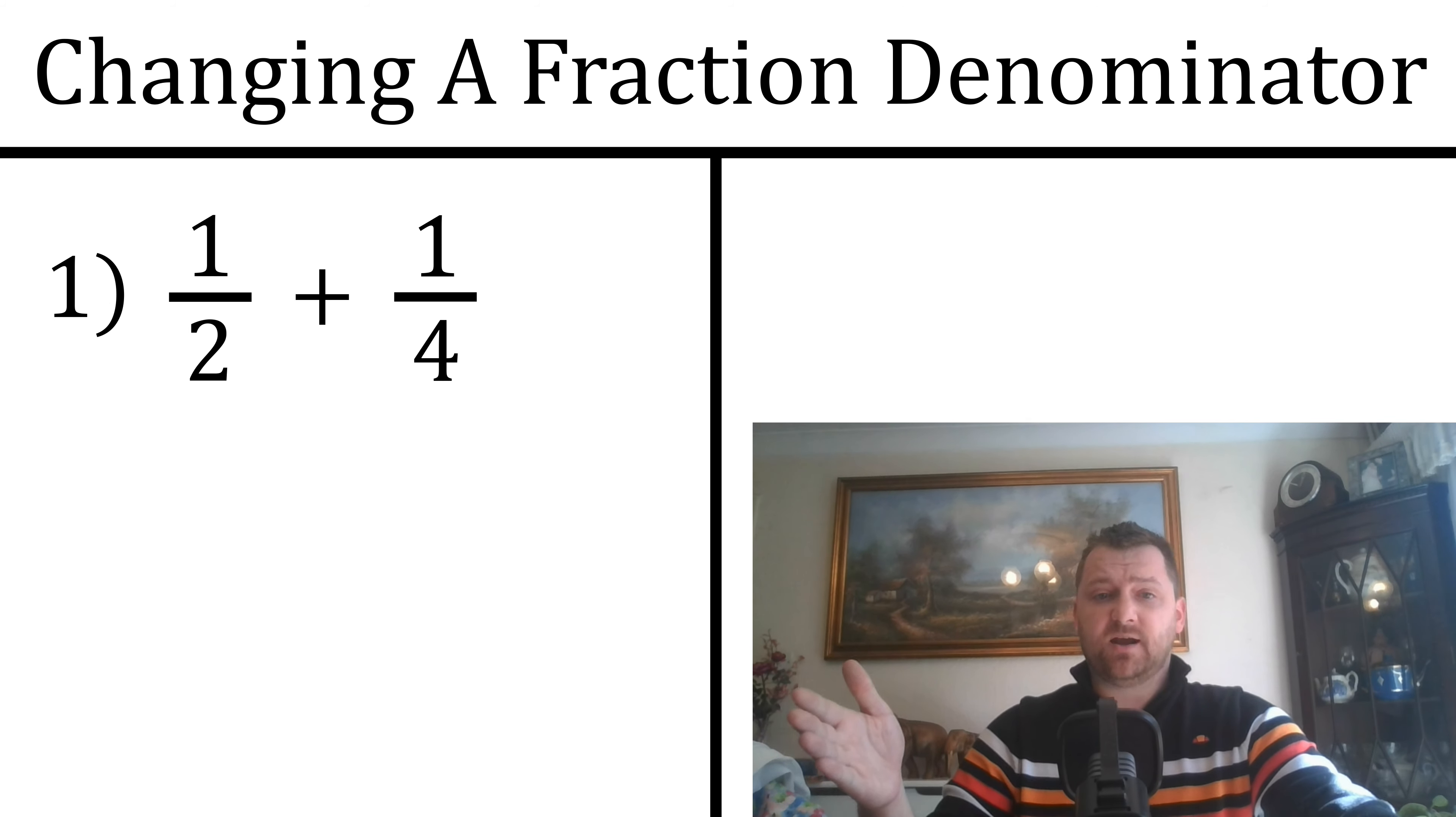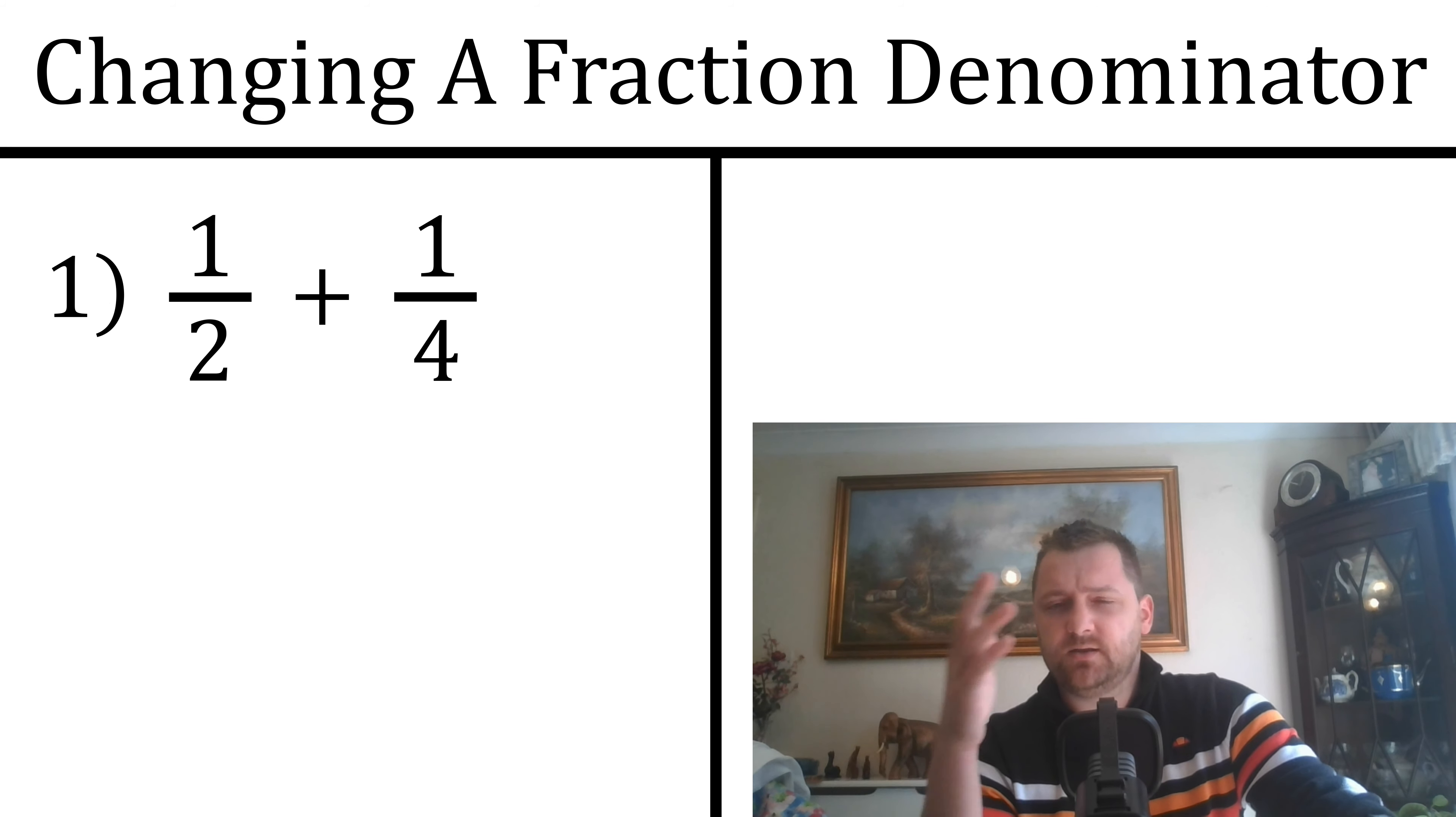If we take the first fraction and times the top by 2 and the bottom by 2, because if you have a fraction and you times the top by any number and the bottom by the same number, it keeps the same value.